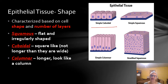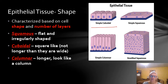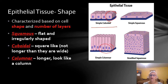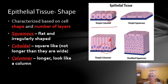Look at these pictures and look at the nucleus to see if you see a difference. Because sometimes it's hard to tell if it's a column or a cube. In simple cuboidal, the nucleus is in the center of the cell. But in simple columnar, the nuclei are not in the center — they might be up at the top, but definitely not in the center. So if you're not sure whether it is cuboidal or columnar, look at the nucleus and ask where it is.